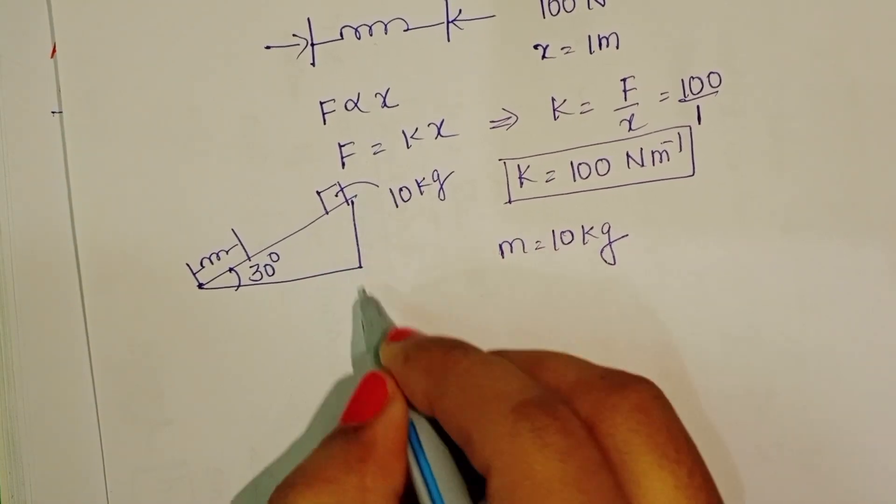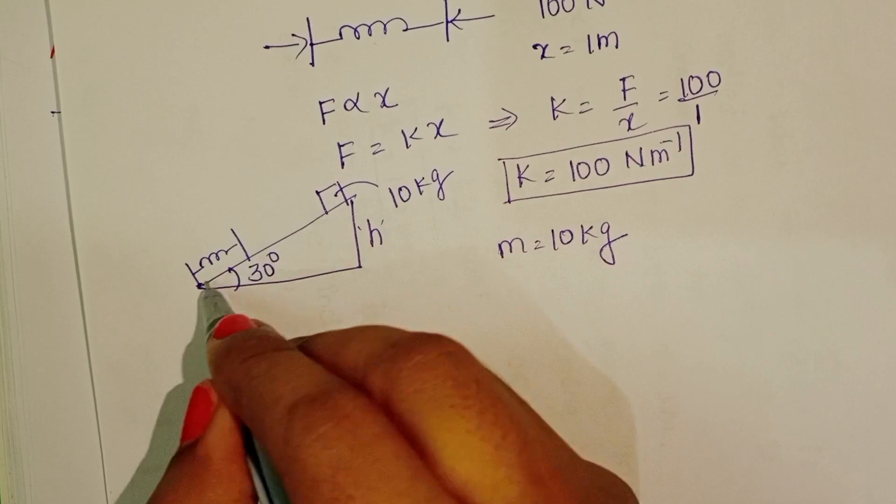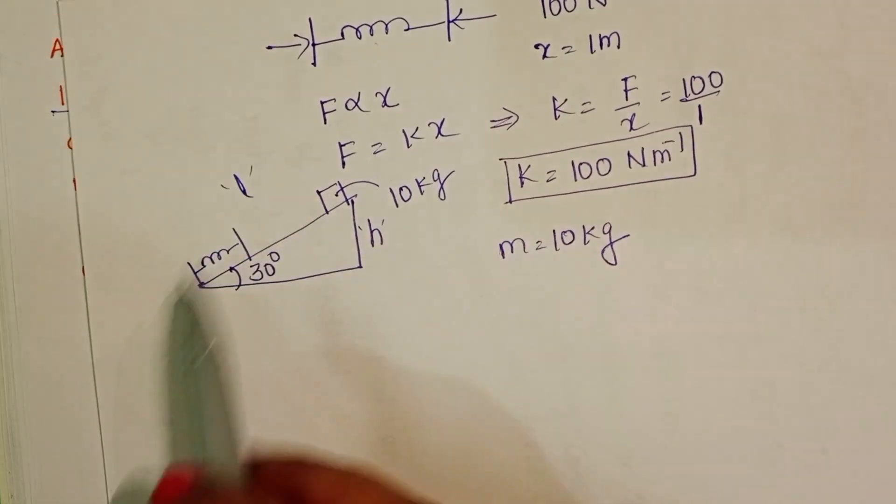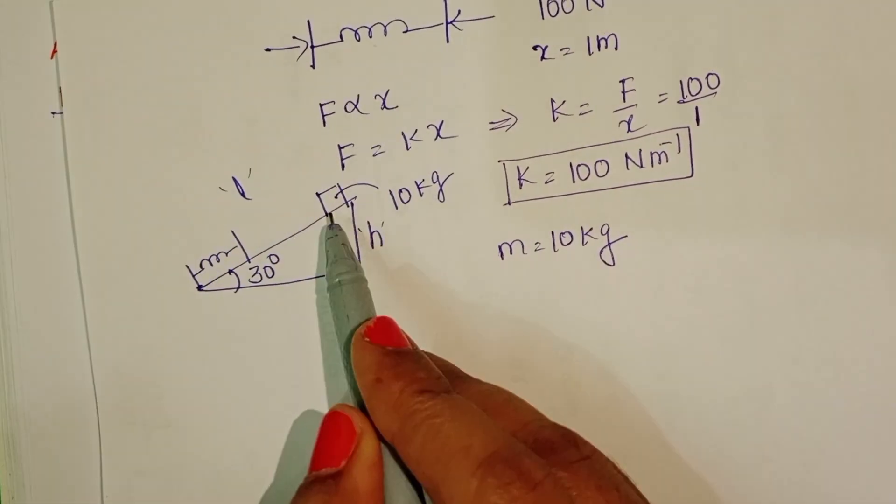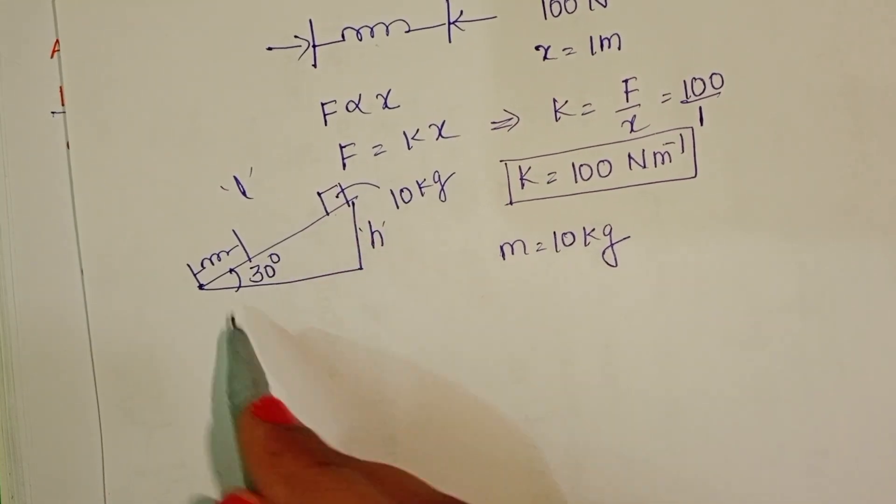We don't know the height of the inclined plane. Let it be h. And the length of the inclined surface, let it be l. Initially, this block is at rest position. From this diagram,